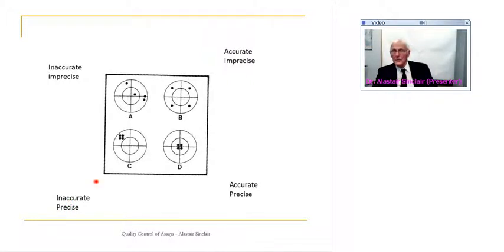Here is the other extreme. In this case, on average we are accurate - we average the right value - but the dispersion of values is very wide, and so we are imprecise but accurate.